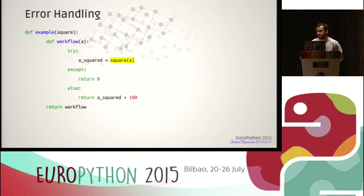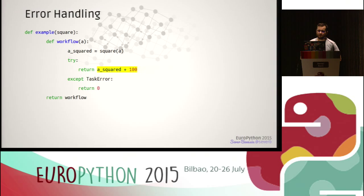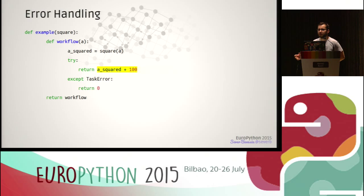For error handling, you might expect it to look like normal Python code with try/except around the function call. But this is not possible because the proxy call is non-blocking, so you cannot get the exception at that point. Actually, this is the place where you have to write your try/except clause — where you force the evaluation of the result. Only at this point do we know for sure if the computation was successful or not.